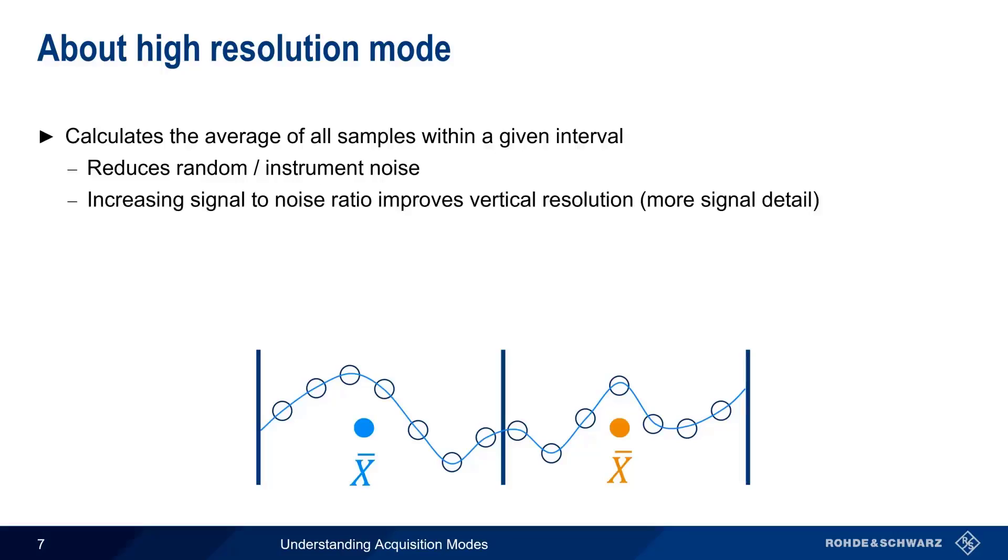Averaging all of the samples in an interval does, however, require more processing than just selecting a sample or the maximum and minimum values, so high-resolution mode may reduce the overall waveform acquisition rate of an oscilloscope.